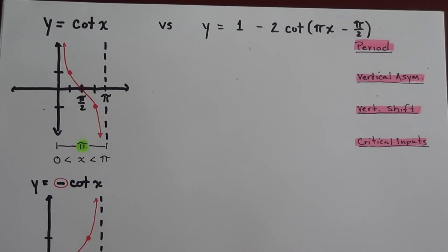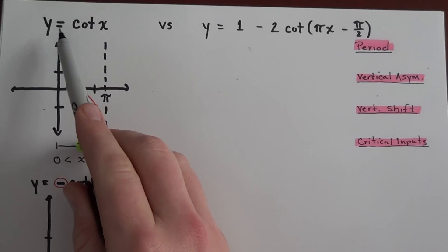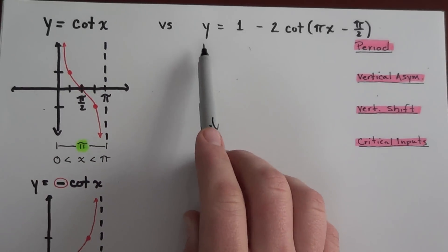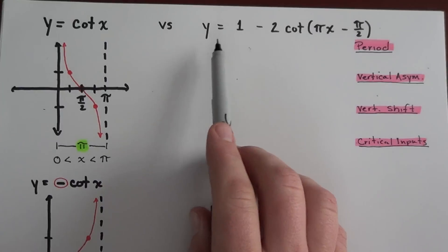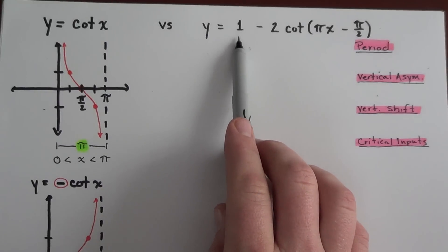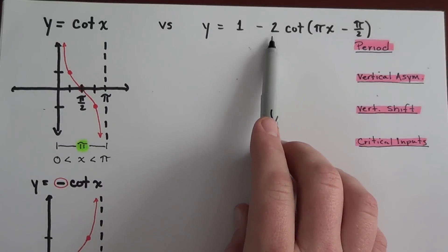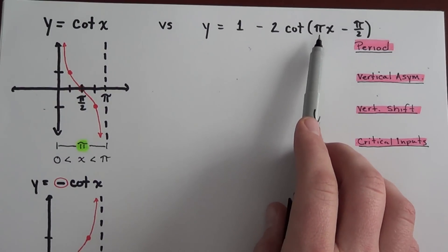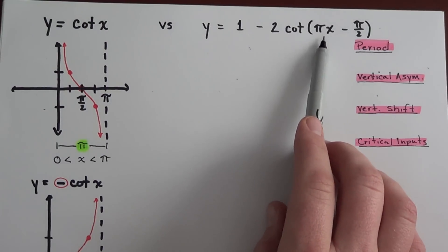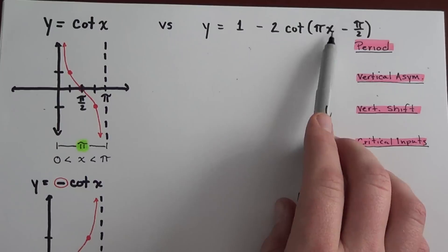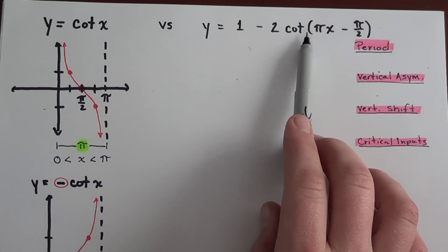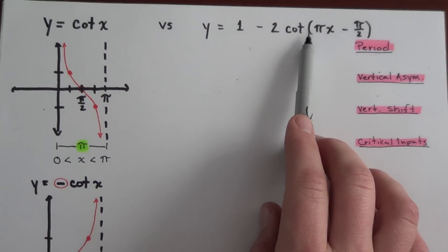We're going to talk about this idea of y equals cotangent x versus what happens if I graph a cotangent function that has some sort of vertical shift involved with it, a multiplier by negative 2 of the function, and what happens when I alter the input before I actually take the cotangent of it.